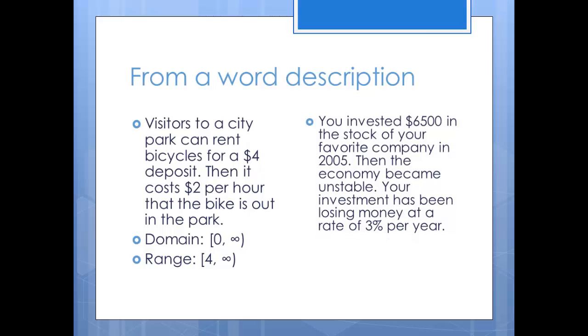You invested $6500 in the stock of your favorite company in 2005. Then the economy became unstable. Your investment has been losing money at a rate of 3% per year. The domain here would be the number of years you leave your money in the stock. Only positive numbers make sense here since time doesn't go into the negatives. So the domain is anything from zero and up. Decimals and fractions do make sense for the domain since you could figure out in the middle of a year how much money your stock was worth.